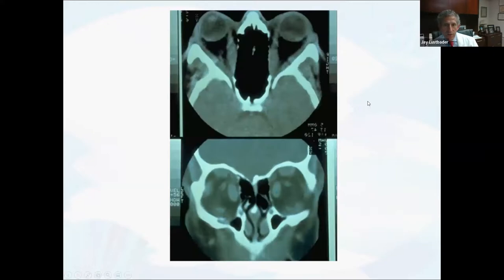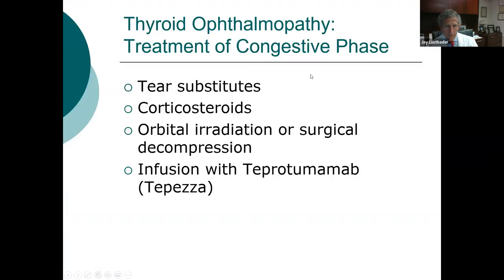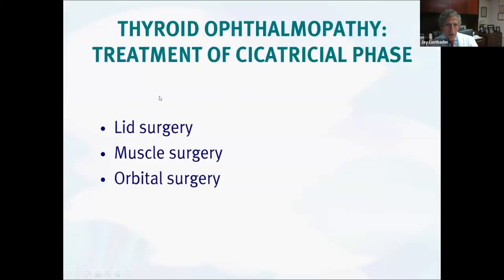Examples include a patient with proptosis, boggy eyelids due to soft tissue involvement, extreme corneal exposure in both eyes, and compression of the nerve causing swelling. A CT scan shows very enlarged medial rectus muscles in both eyes compared to the normal lateral rectus. Treatment involves tear substitutes, sometimes steroids, radiation or surgical decompression for orbital involvement. We now also have teprotumumab (Tepezza), which works quite well at calming signs and symptoms of thyroid ophthalmopathy. Long-term in the cicatricial phase, surgery may be necessary — lid surgery, muscle surgery for permanent strabismus, or orbital surgery.